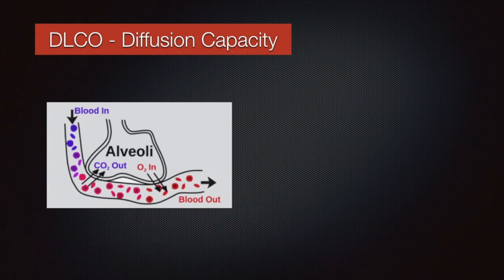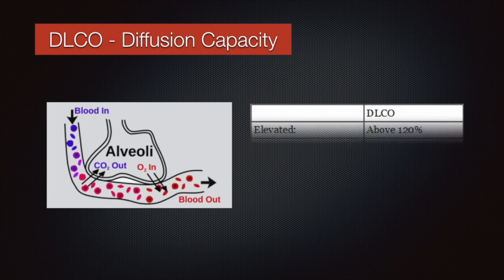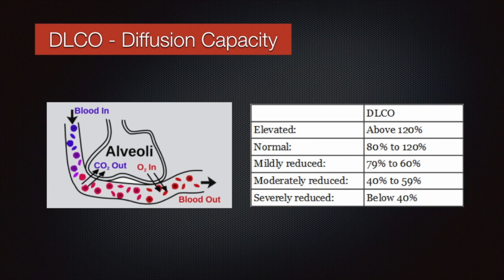Next terminology is diffusion capacity of the lung, also known as transfer factor. It measures the transfer of gas from air in the lung to the RBCs in lung blood vessels. Because carbon monoxide is tightly and rapidly bound to hemoglobin in the blood, it is generally the test gas used to measure diffusing capacity. The diffusion limitation may be graded as given here.